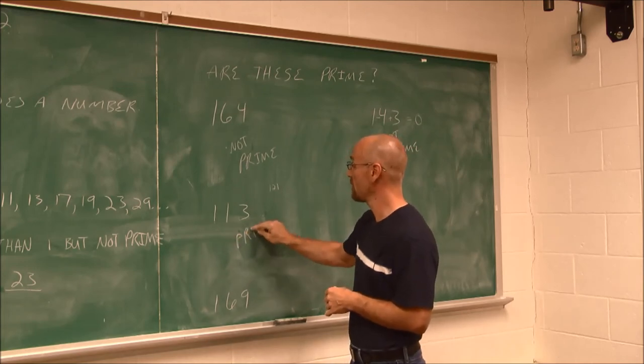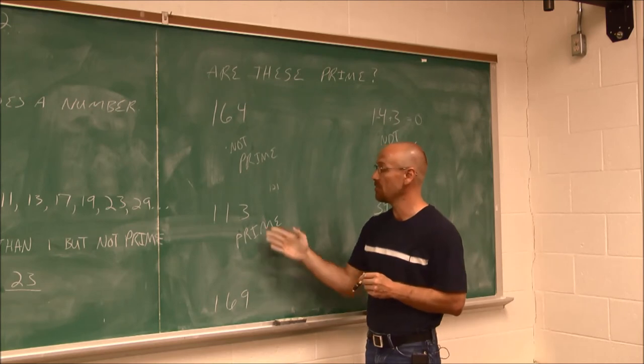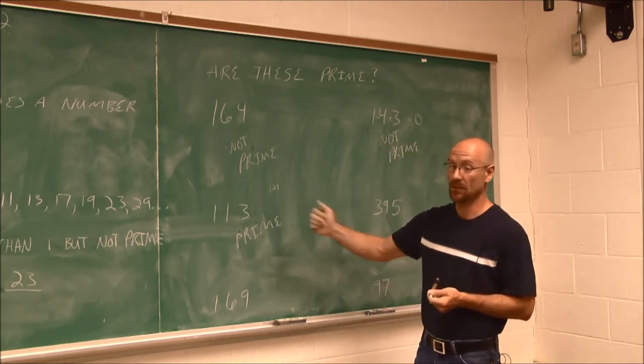It's not divisible by 5. So this actually turns out to be a prime number. This is prime. The last two we've seen were composite because they weren't prime. This one is prime because it's not divisible by anything besides 1 and itself.